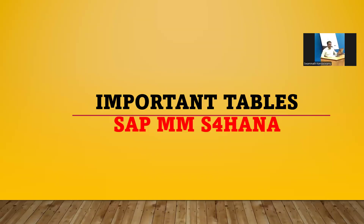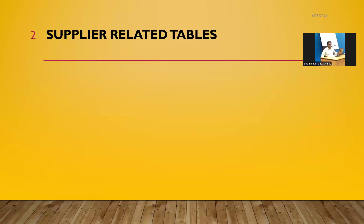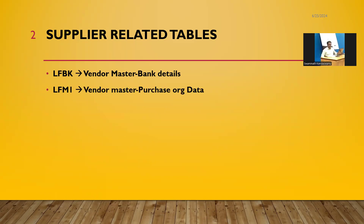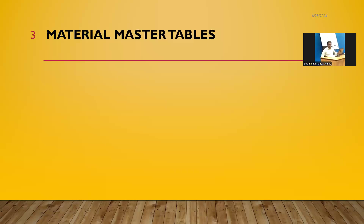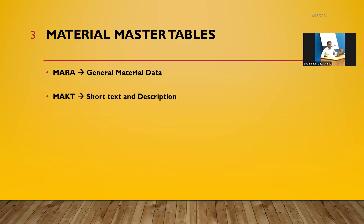Now let's see all the important tables in SAP MM from the slides. First, supplier-related tables — that is, vendor-related tables. LFBK: Vendor Master Bank Details. LFM1: Vendor Master Purchase Organization Data. LFM2: Vendor Master Purchasing Data. LFA1: Vendor Master General Section. LFB1: Vendor Master per Company Code.